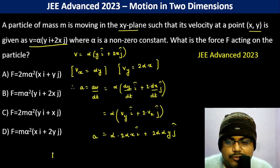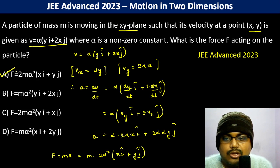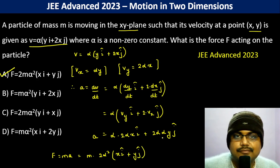Therefore the force will become mass into acceleration, which is m into 2 alpha square (x i cap plus y j cap), which is option A. Thank you.